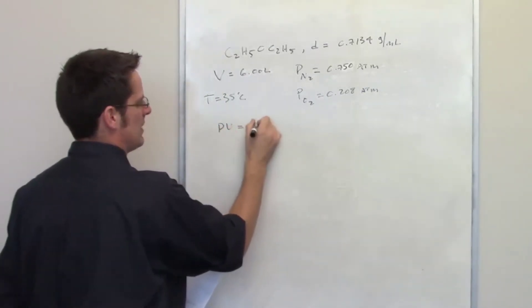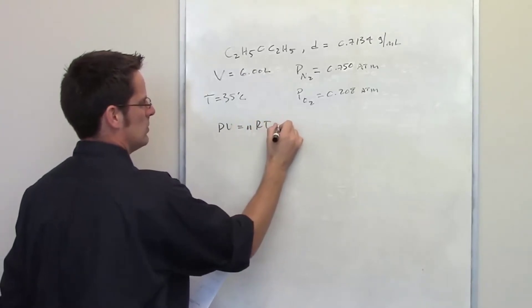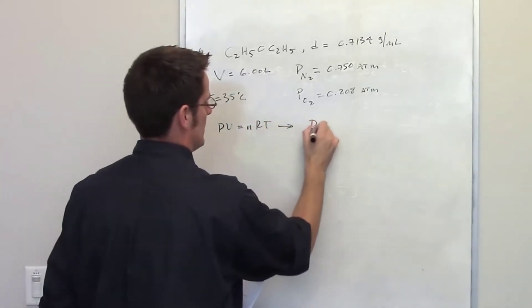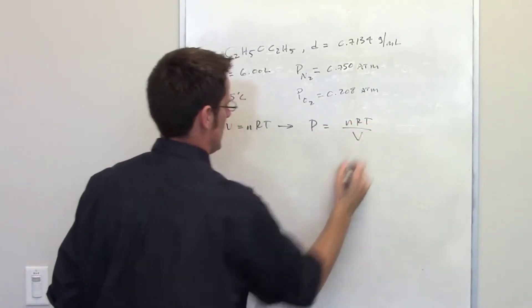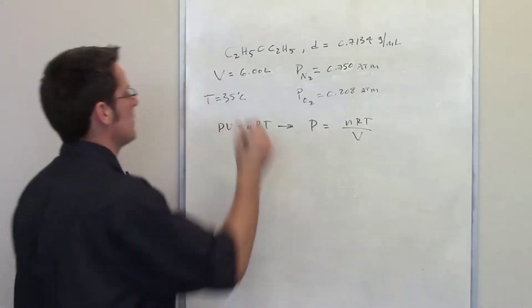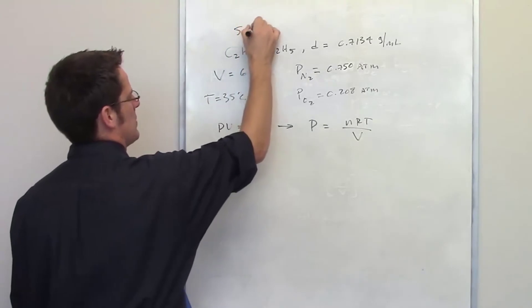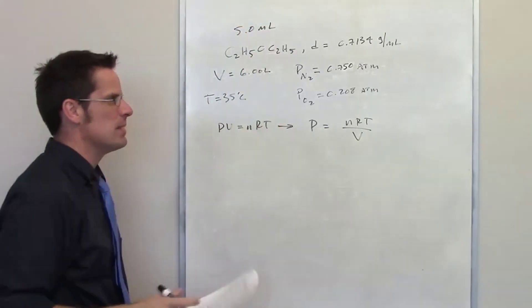Well using the PV equals NRT equation you should know or recognize that pressure of any gas is going to be equal to NRT divided by V. We're also told parenthetically that the amount of diethyl ether that is thrown into the system is 5 milliliters.